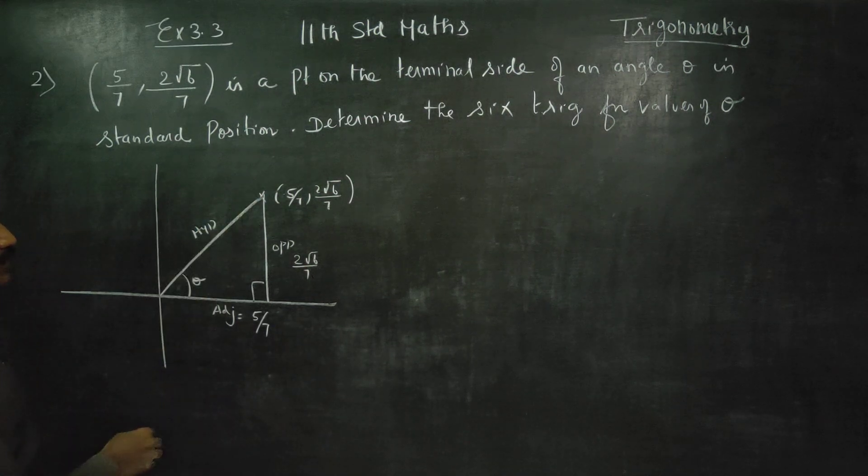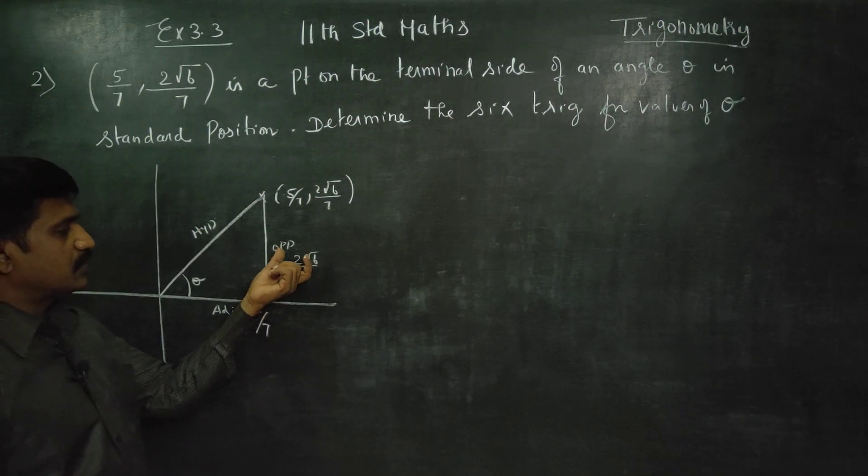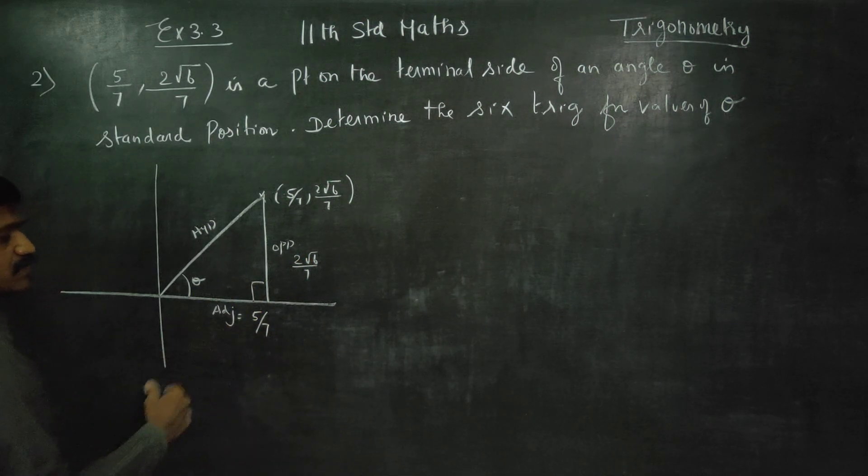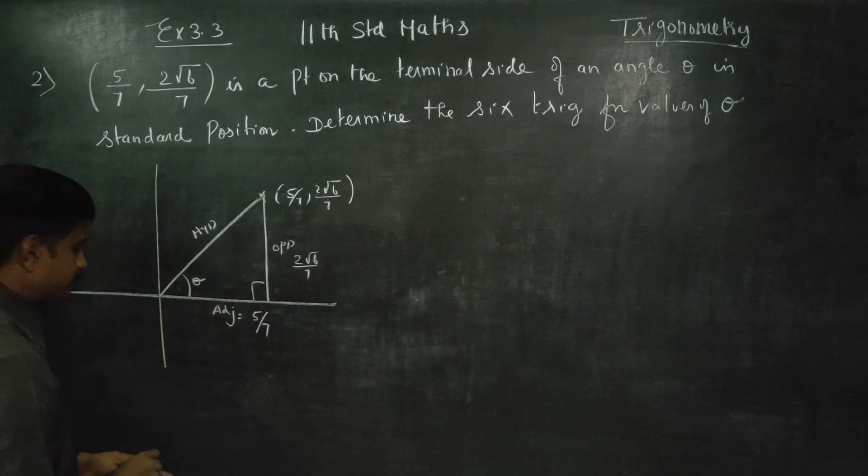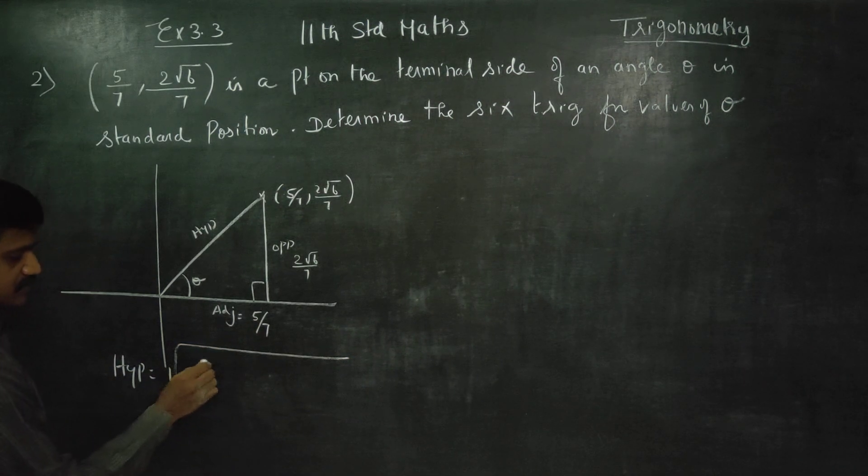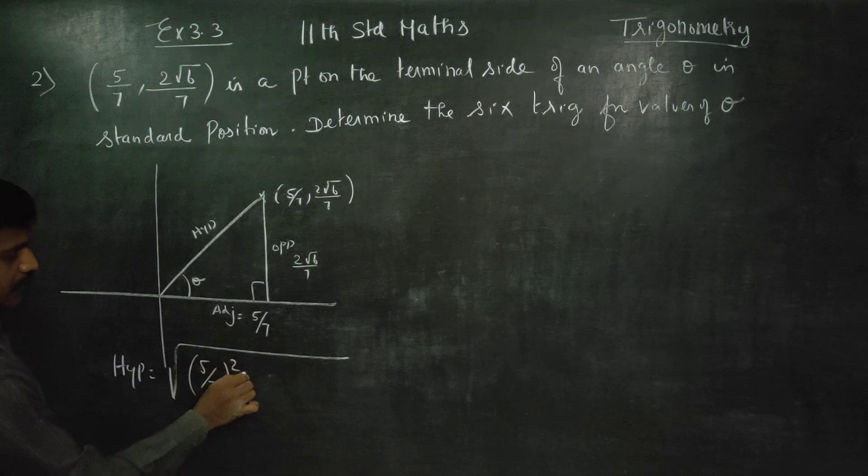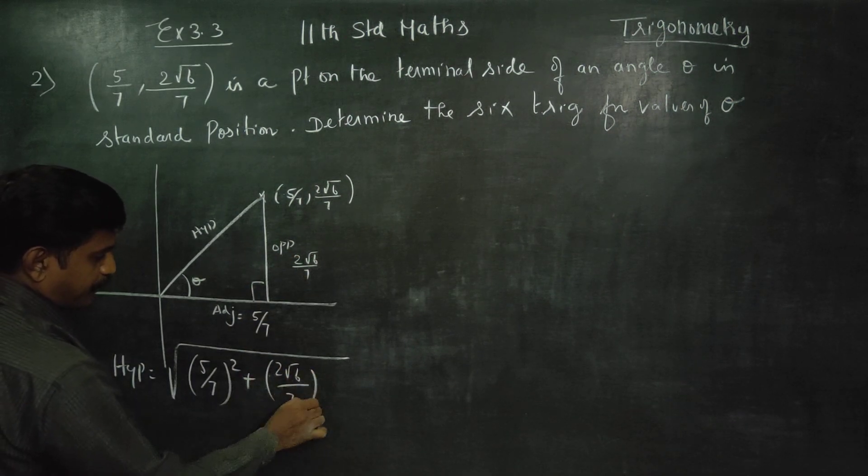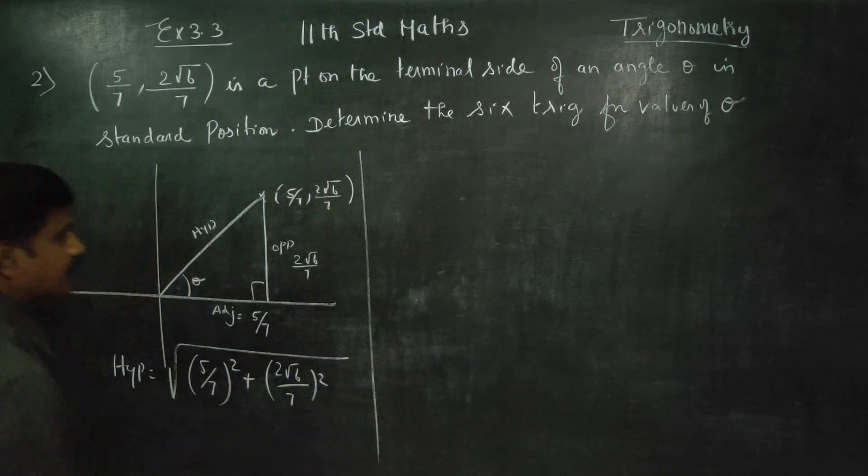Now, this is the hypotenuse. Hypotenuse equals square root of adjacent square plus opposite square. This is my formula using Pythagoras theorem.